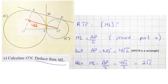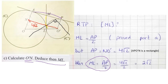Part C continued — deduce ML. Note: I always use what was proven before. O'N was just calculated. Now I want ML. ML was used in part A: it equals AP over 2 by the median relative to hypotenuse theorem. AP equals O'N because we proved the quadrilateral is a rectangle, so opposite sides are equal. Therefore ML equals 4√2 over 2, which gives ML equals 2√2.